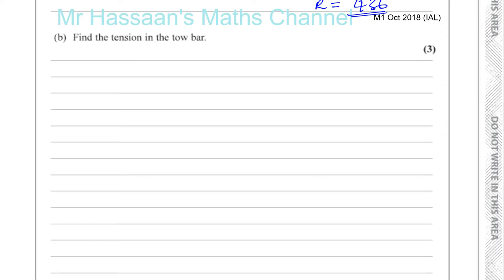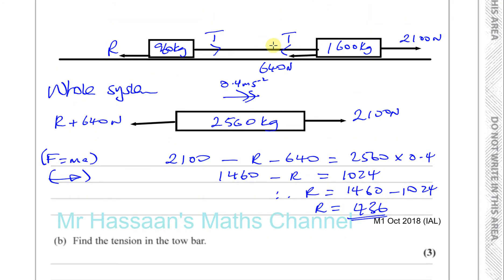That's what part A is asking for. Then it says find the tension in the tow bar. When finding the tension in the tow bar, we consider just one part of the system. I'll choose the car because there are fewer forces acting on it — two forces on the car versus three on the truck. Either choice gives the same answer, but the car makes life easier.